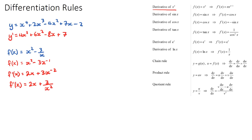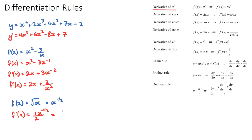One more example for the power rule: if f(x) = root x and we want to derive that, we can write it as x to the power of one half using index rules. Deriving brings the half down, giving one half times x to the negative one half. Since x to the negative one half is 1 over root x, the answer is 1 over 2 root x.